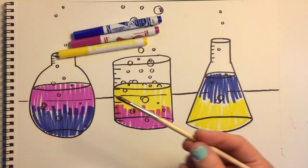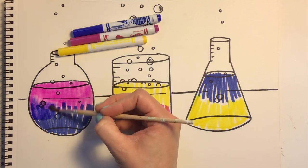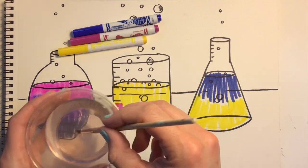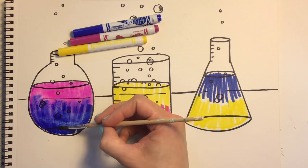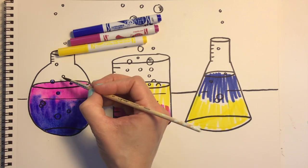Now I'm going to get a paintbrush and water and paint right over my markers. The washable markers turn right into watercolor paint. Don't forget to paint all of your bubbles.